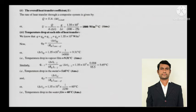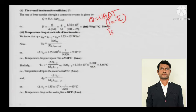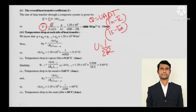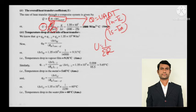For the overall heat transfer coefficient U: the rate of heat transfer through a composite system is given by Q = U·A·ΔT, where ΔT = T_hot − T_cold. U equals the reciprocal of the sum of all resistances. Since Q/A is already known from the previous calculation and ΔT is known, substituting and solving gives the value of U directly.